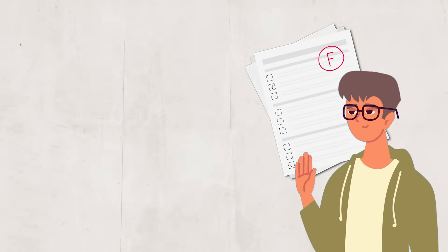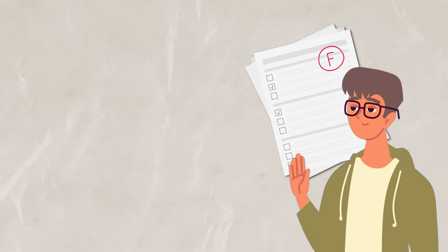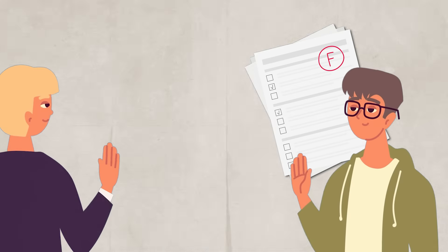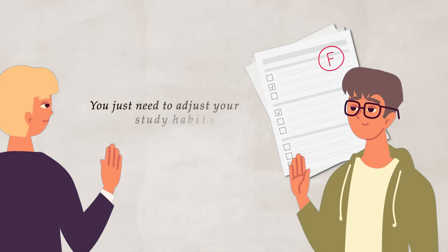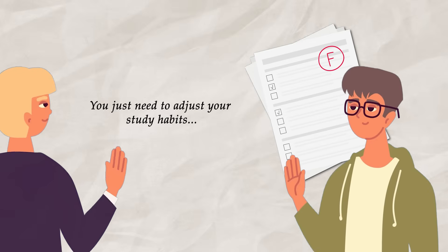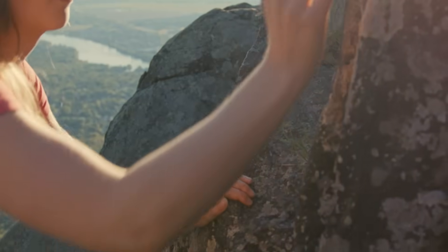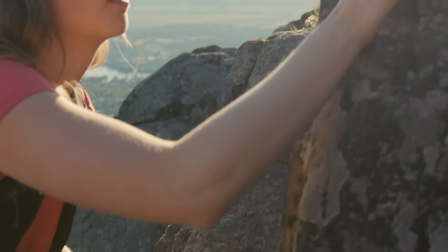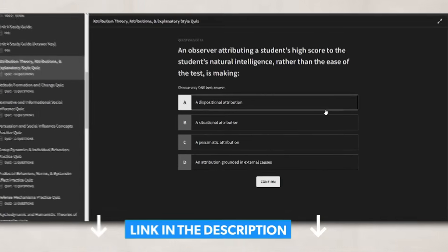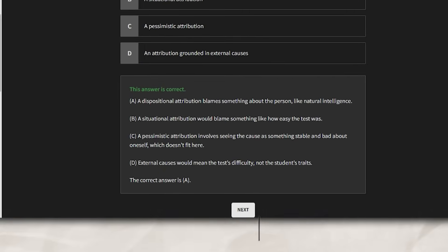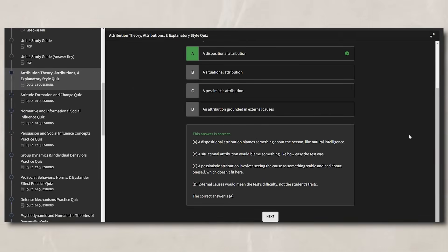If we look at the student who failed their test from the perspective of someone with a high internal locus of control, we can see that the student would most likely respond to the F by saying they just need to adjust their study habits and prepare more for the next test — the focus is on internal factors the individual can control. So a person's locus of control shapes how they respond to challenges and how they attribute their success or failure. Check out the practice resources in the Ultimate Review Packet for more help.